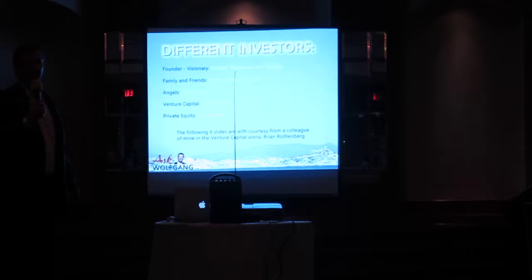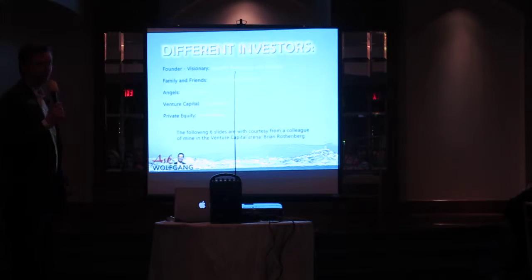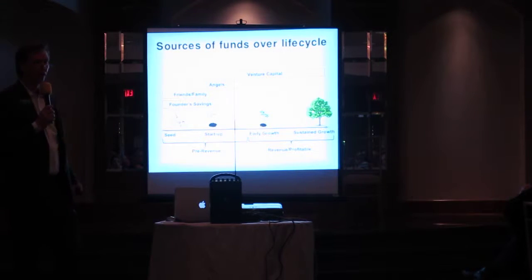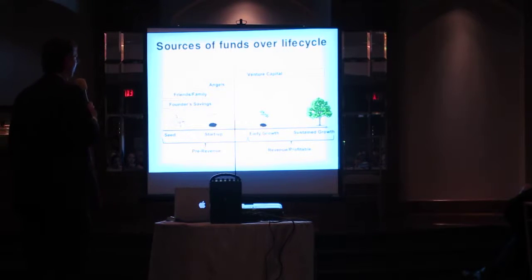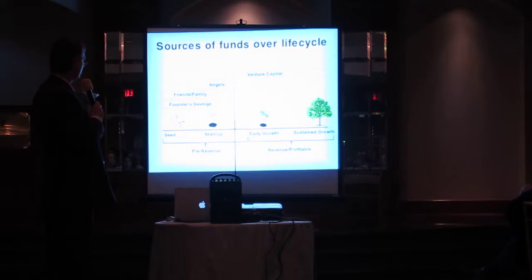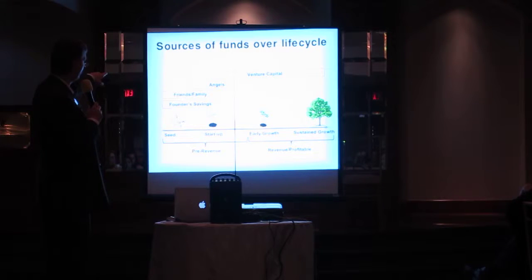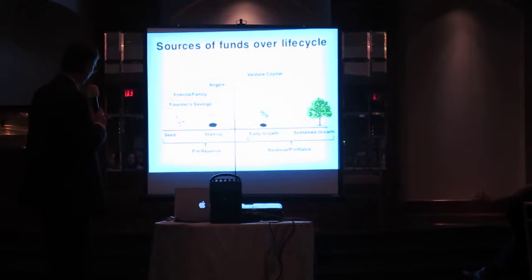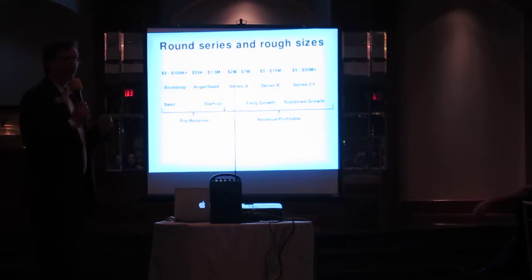The following slides are courtesy of a colleague of mine working in the venture capital arena — his name is Brian Rosenberg — and I liked his graphics very much. They show beautifully how funding sources relate to the life cycle of a company. On the very left-hand side you see the timeline: the seed and startup phase, then early growth, then sustained growth. It starts pre-revenue, covered by founders' savings and friends and family, then the angel round, and then the venture capital round, which covers startup, early growth, and sustained growth.